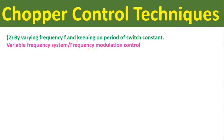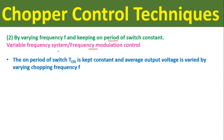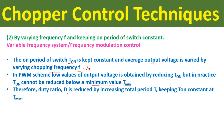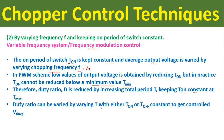The second one is the variable frequency system, also called frequency modulation control, which is done by varying the frequency f and keeping the on period of the switch constant. In the variable frequency system, Ton is kept constant and the average output voltage is varied by varying the chopping frequency f, which equals one upon total time period T. In the PWM scheme, low values of output voltage are obtained by reducing Ton, but in practice Ton cannot be reduced below a minimum value Tmin, so the duty ratio D is reduced by increasing T while keeping Ton constant at Tmin.